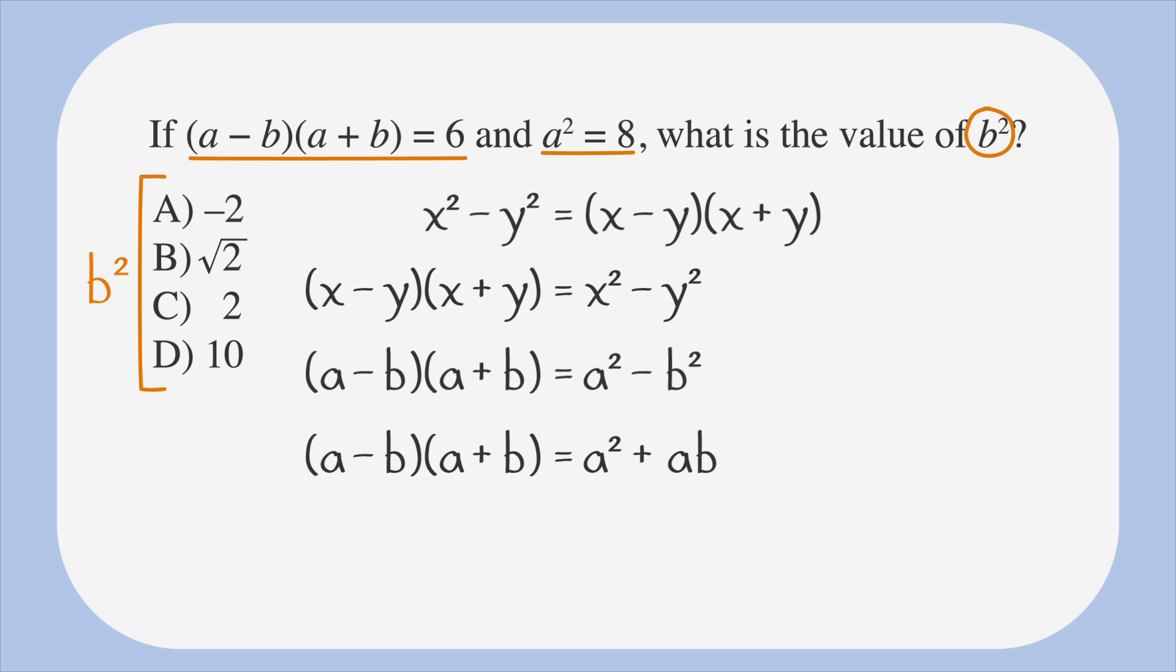If you didn't see this perfect square setup, don't worry. You could have foiled a minus b times a plus b, and you would have gotten the same result. Moving on, we know that a minus b times a plus b equals 6, so we know 6 equals a² minus b². The question tells us that a² equals 8, so let's replace the a² in our equation with 8 to get 6 equals 8 minus b². We're looking to solve for positive b², so let's add b² to both sides to get 6 plus b² equals 8. Subtract 6 from both sides, and we get b² equals 2, which is answer choice c. Nice work!